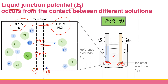This charge difference gives rise to what is called liquid junction potential, with the symbol E_J. Basically, you have different solutions and ions that migrate at different rates — protons migrate faster than chloride — so the right-hand side becomes more positive than the left-hand side, creating a charge difference and thus liquid junction potential.